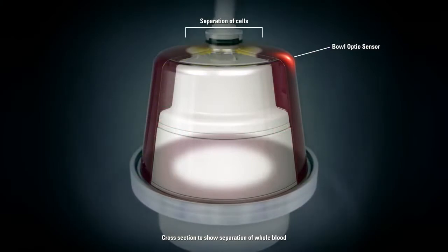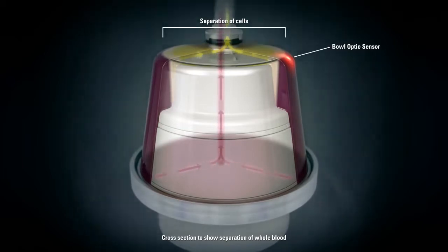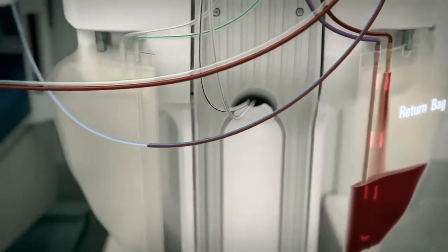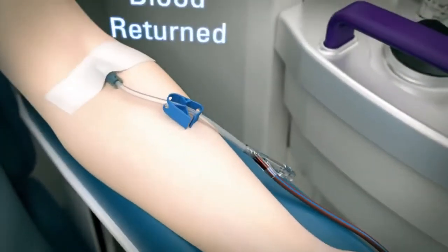As the centrifuge separates the plasma and RBCs from the buffy coat, the double needle technique allows for these separated components to be safely returned to the patient, reducing the extracorporeal blood volume and ensuring a continuous one-time buffy coat harvest.